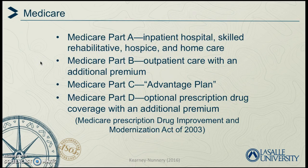Medicare is available for Americans age 65 or older and those with certain disabilities or end-stage renal disease. Part A provides for inpatient hospital, skilled rehabilitative, hospice, and home care services. Part B covers outpatient care, necessary and selective preventive services and equipment. Part C is the Advantage plan, and Part D is the Optional Prescription Drug Coverage Plan.